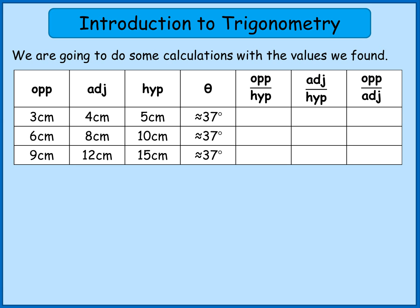We're going to do some calculations with the values we've just found. In the table we've got opposite divided by hypotenuse, adjacent divided by hypotenuse, and opposite divided by adjacent. So for the first triangle, opposite divided by hypotenuse is 3 divided by 5 which comes out as 0.6. Adjacent divided by hypotenuse is 4 divided by 5, that's 0.8. And opposite divided by adjacent is 3 divided by 4, which comes out as 0.75.